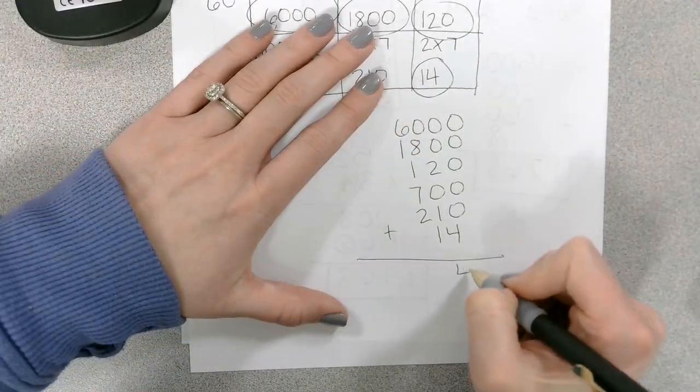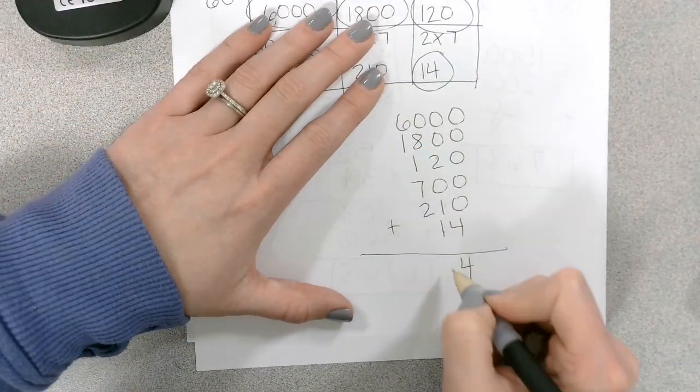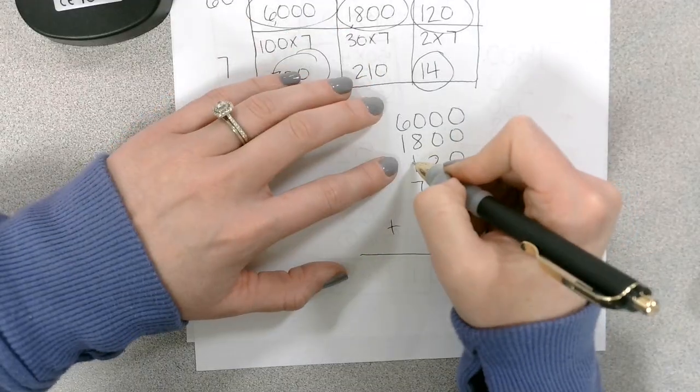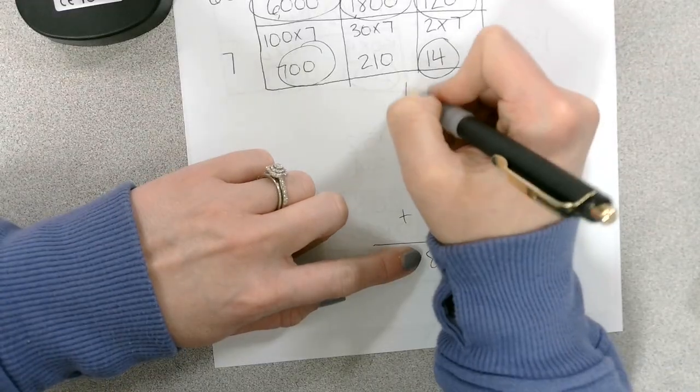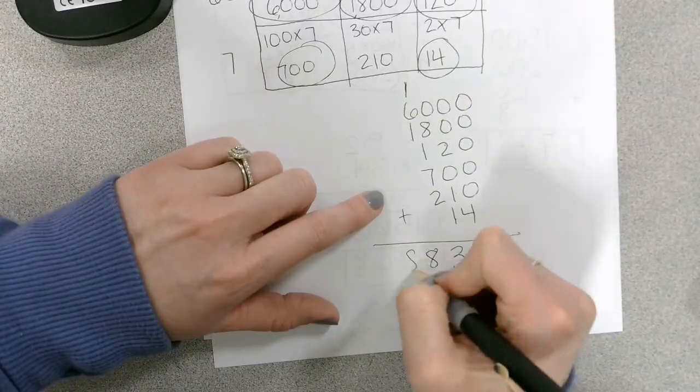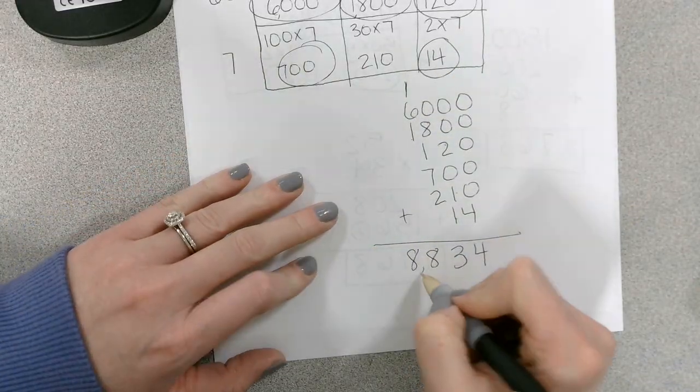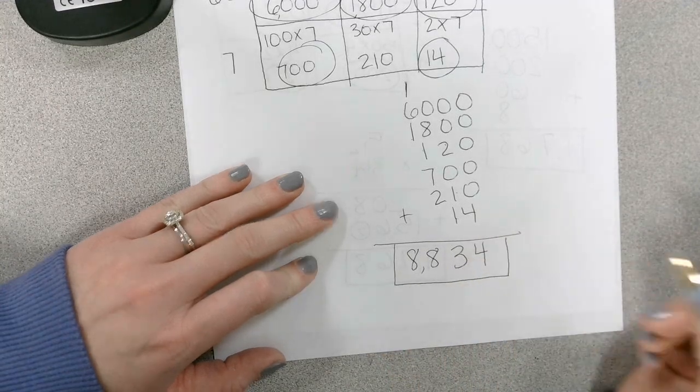Okay. I have a 4 in my ones place. 2 plus 1 plus 1 is 3. 8 plus 1 is 9, plus 7 is 16, plus 2 is 18. So I write the 8 and carry the 1. 6 plus 2 is 8. So our answer is 8,834.